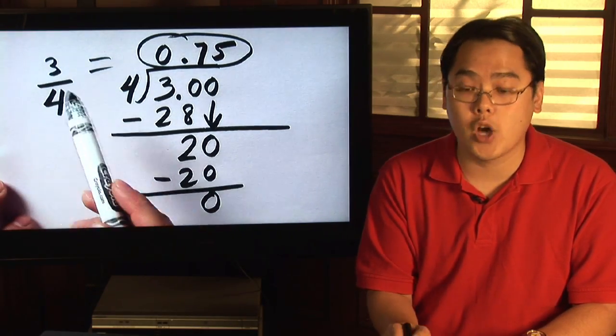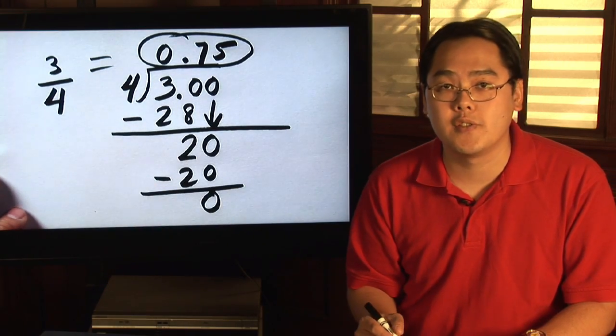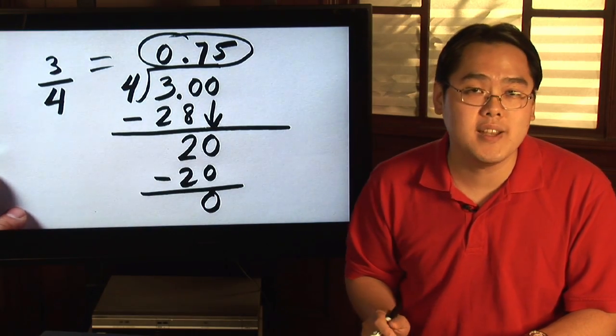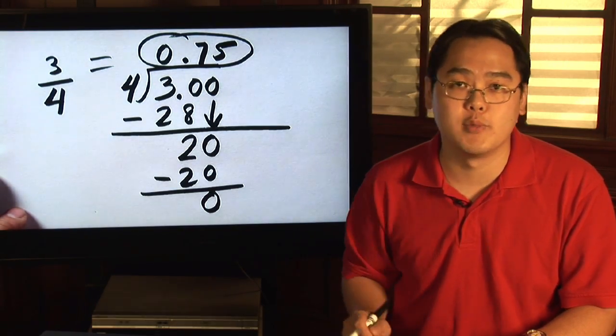Just keep in mind the numerator is always going to be on the inside and the denominator is going to be on the outside of the long division structure. So I'm Jimmy and here's how you convert from fractions to decimals.